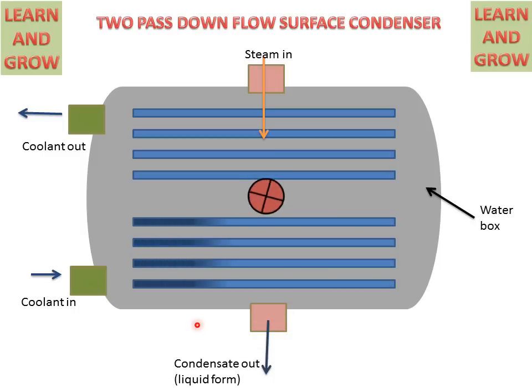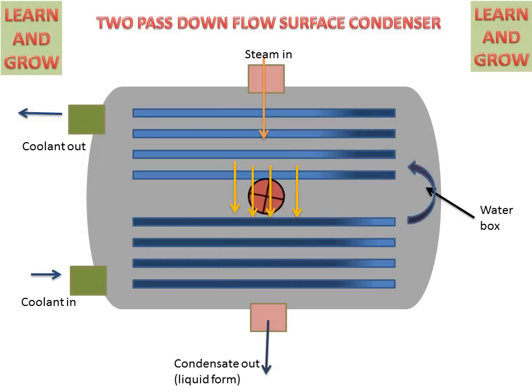Water will flow through these tubes and this water will recirculate in the upper section tubes. Steam will come in contact with these tubes which are cold. Then they will change into liquid form which is called condensate and condensate will be out from the down side in liquid form.